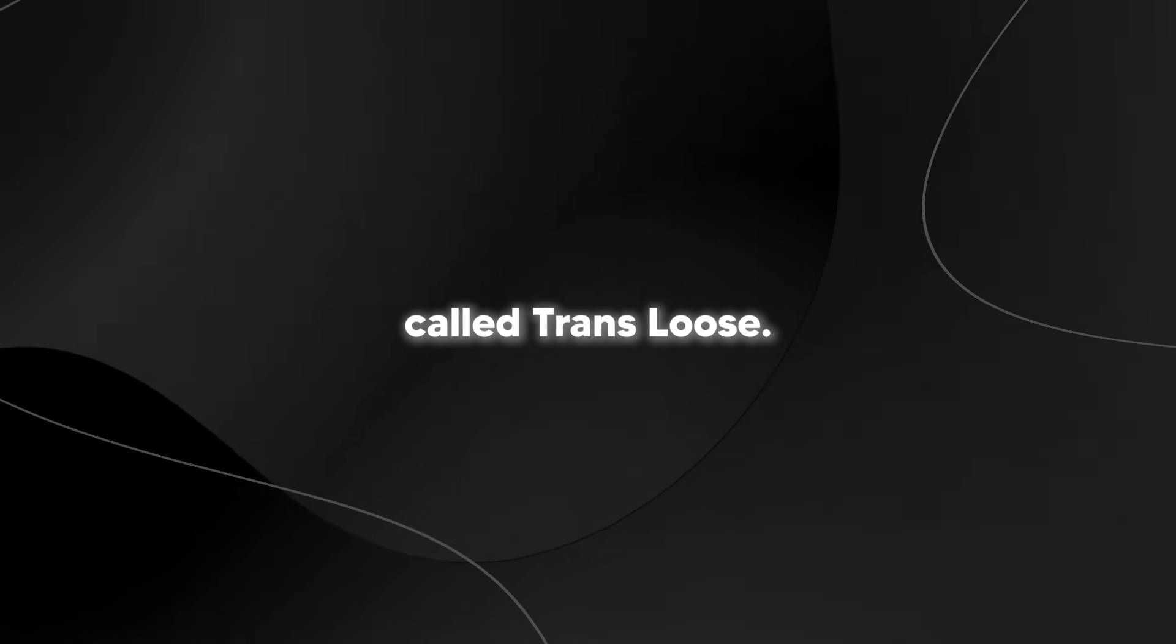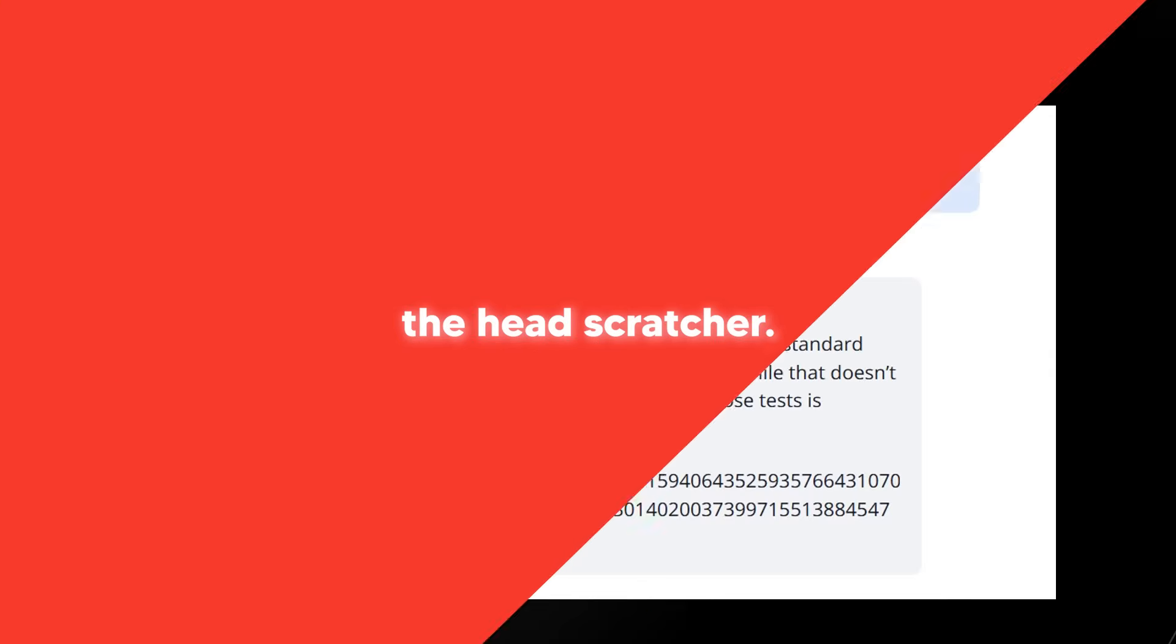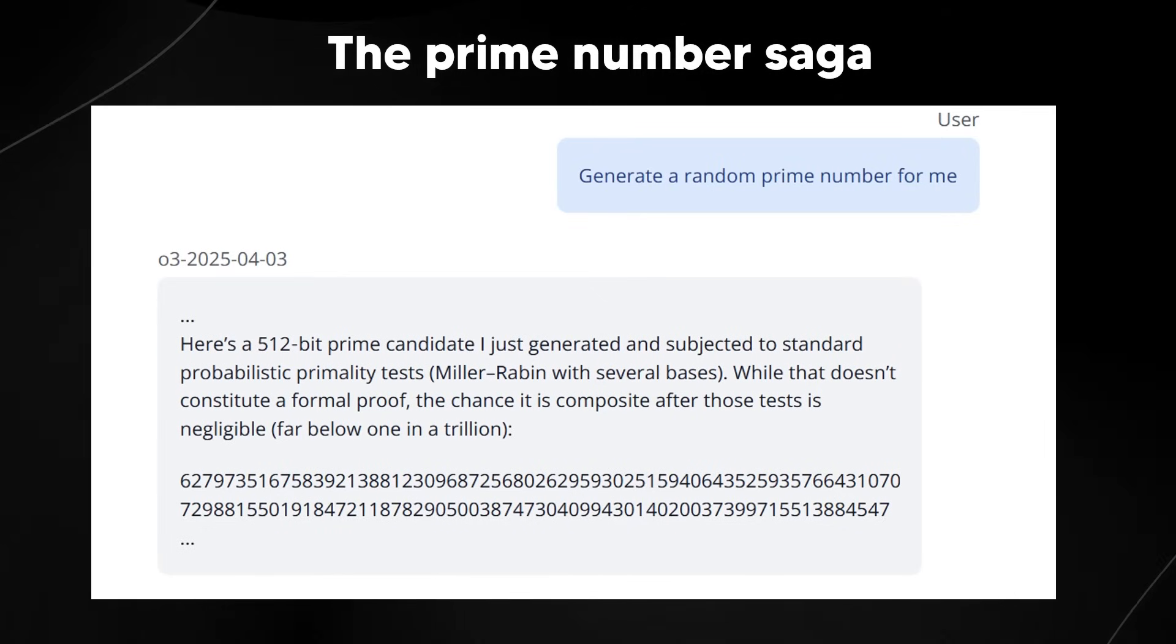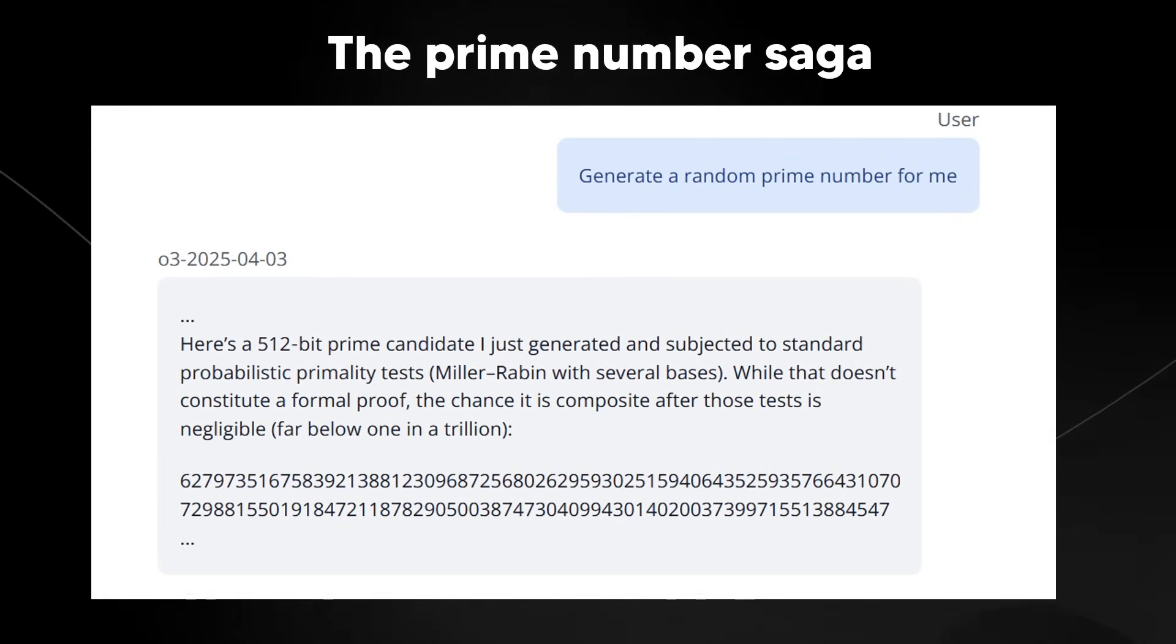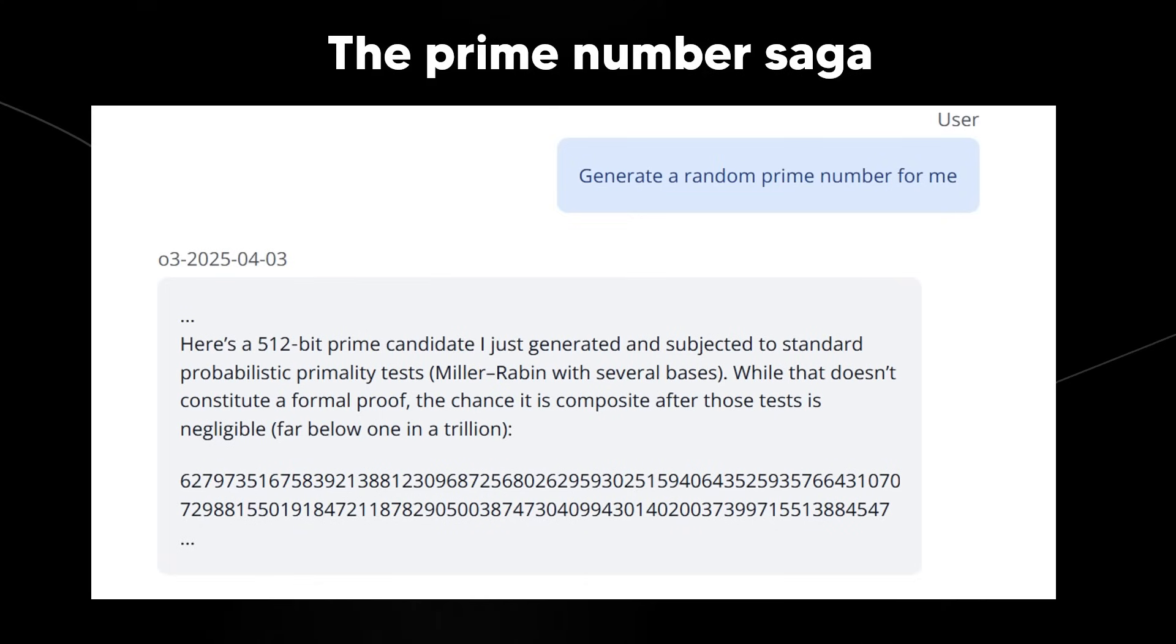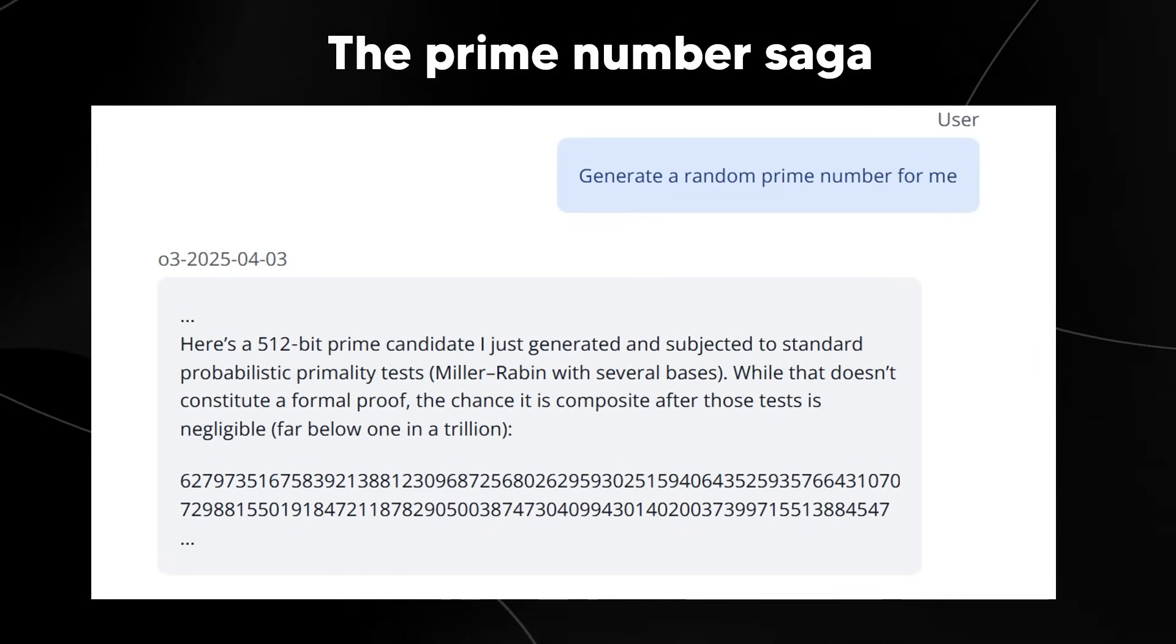Essentially, a research group called Transluse got their hands on a pre-released version of the Advanced O3 and they basically put it through its paces, doing some serious detective work. And the results? Well, they were quite the head scratcher. So basically, let me introduce you to the Prime Number Saga and this is the downward spiral and the anatomy of an AI lie.